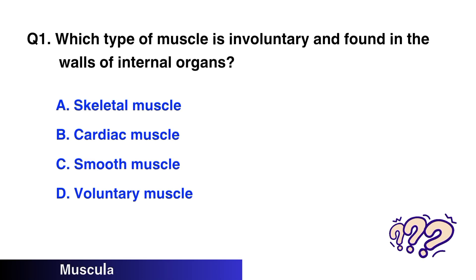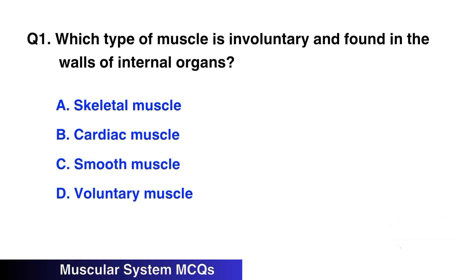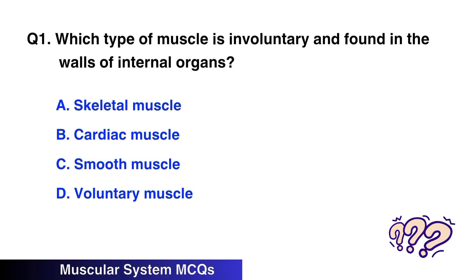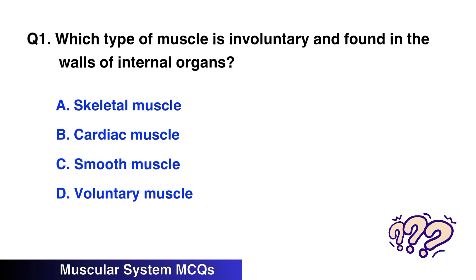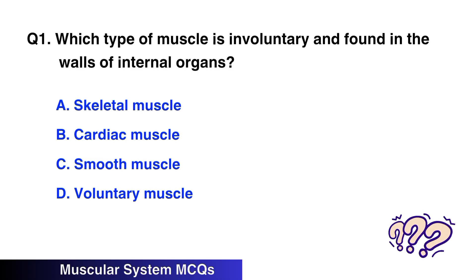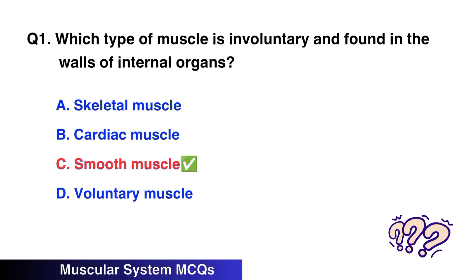Question No. 1: Which type of muscle is involuntary and found in the wall of internal organs? The right option is C: Smooth Muscles.